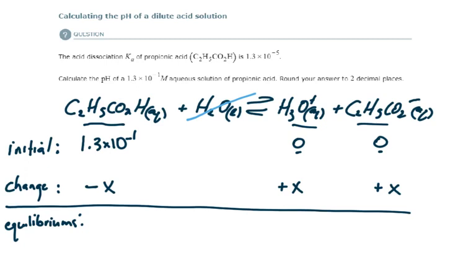So the equilibrium concentrations are going to be equal to the initial plus the change according to what we have in this ICE table. So for propionic acid, it's 1.3 times 10 to the minus 1 minus X. This is plus X. 0 plus X is plus X. And 0 plus X is plus X.